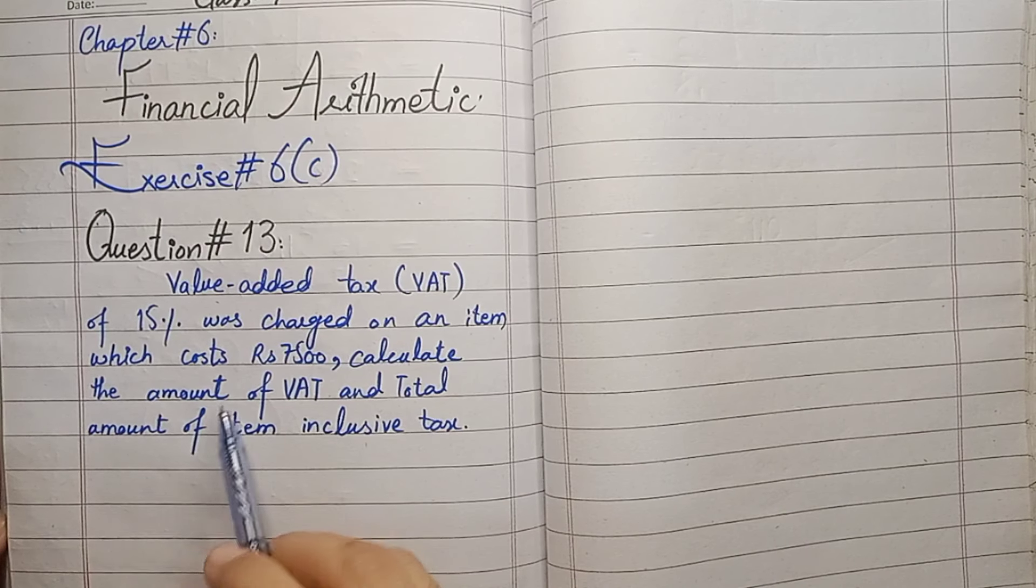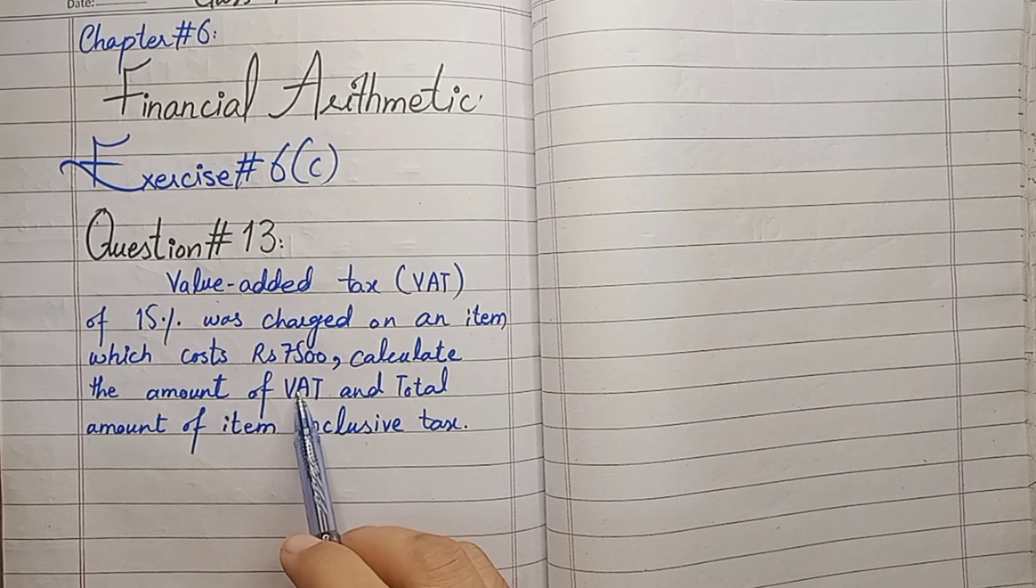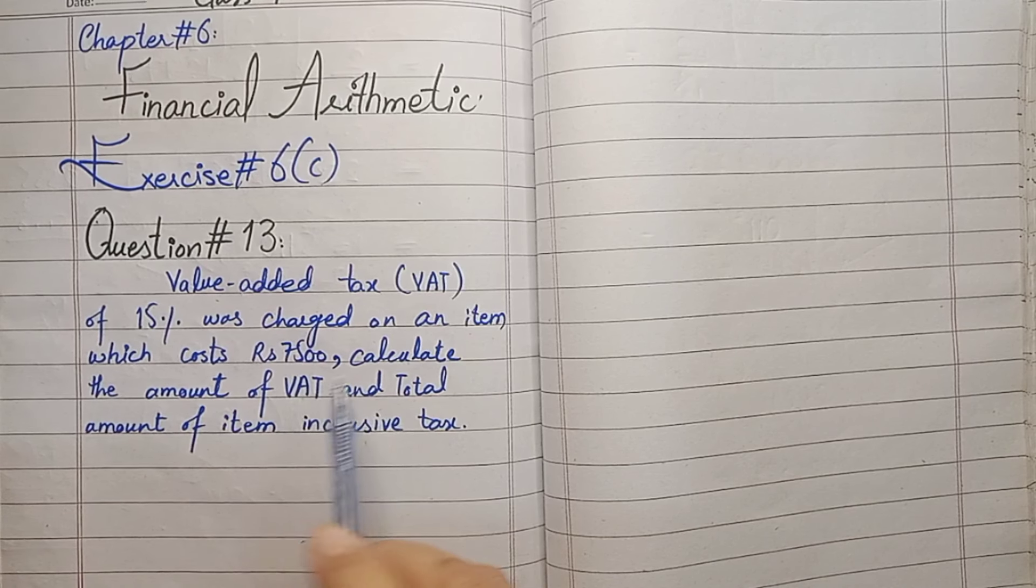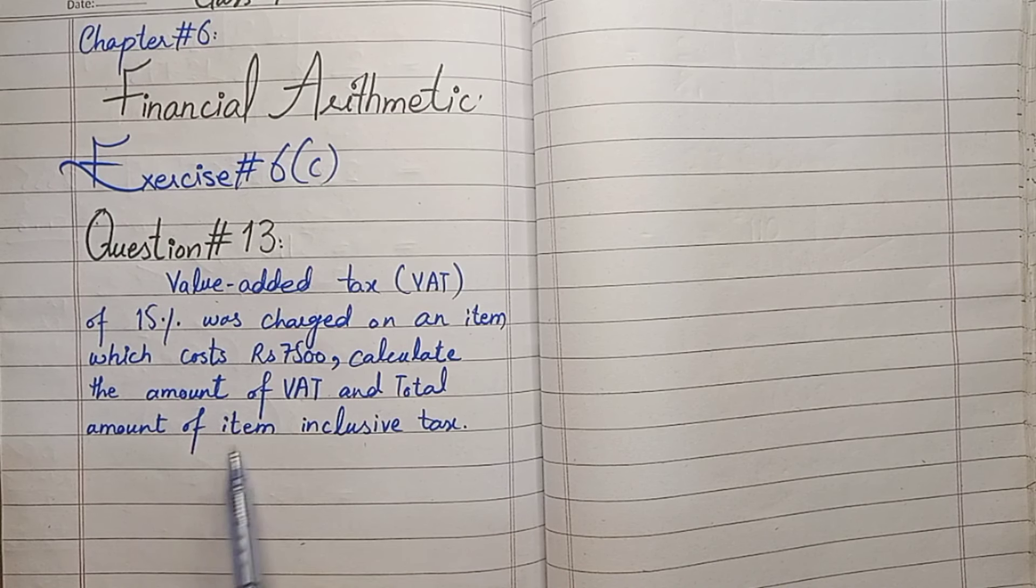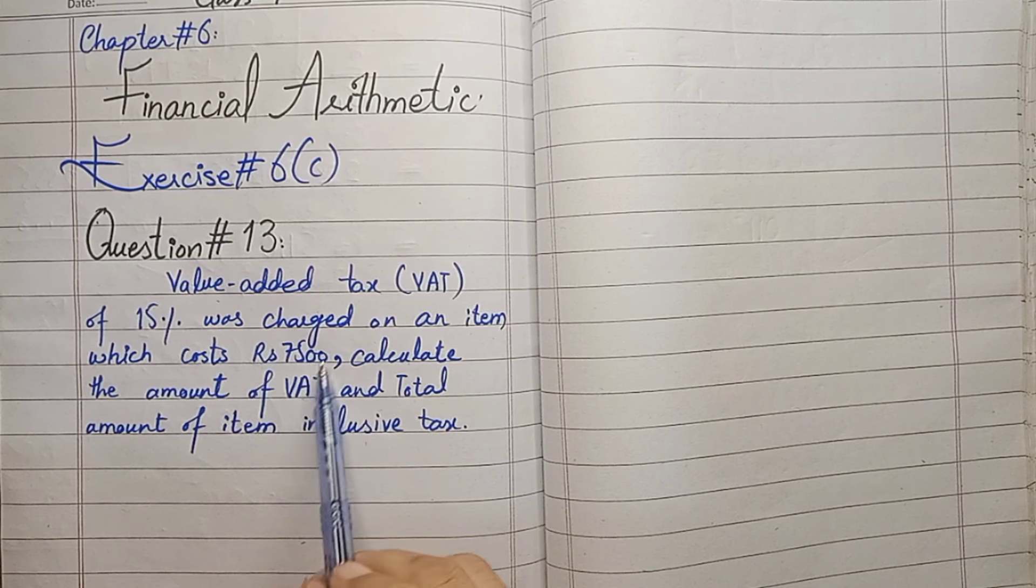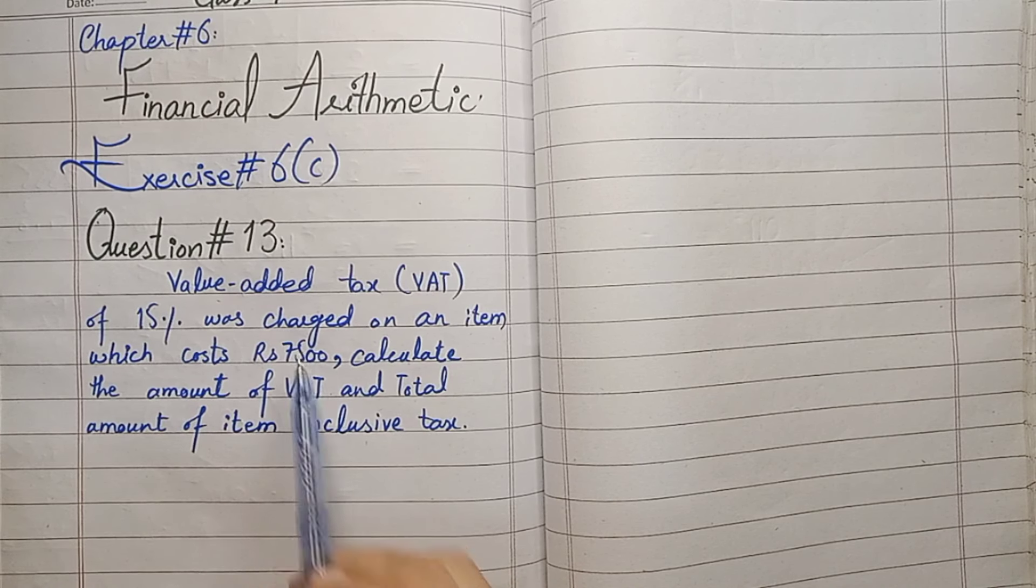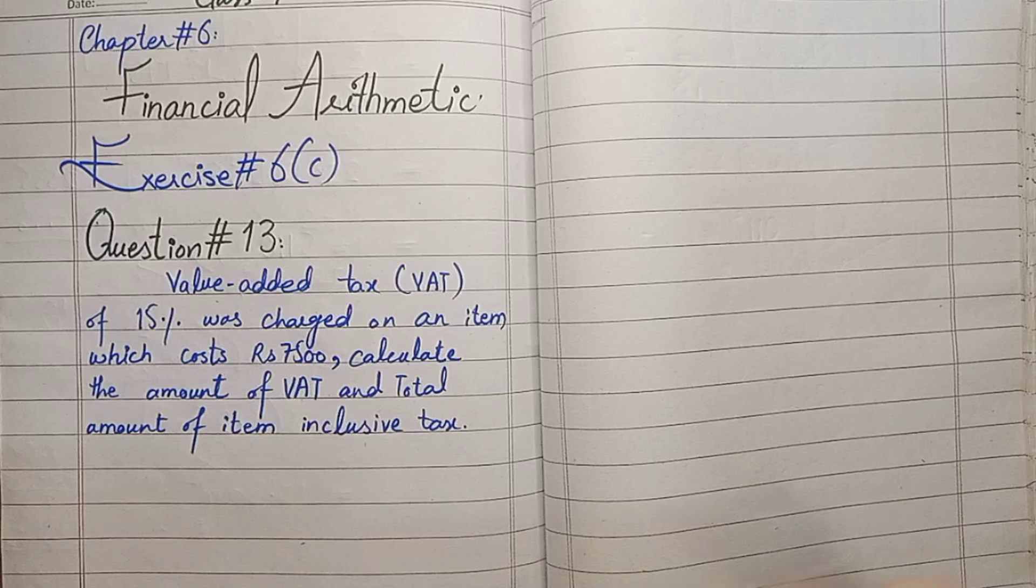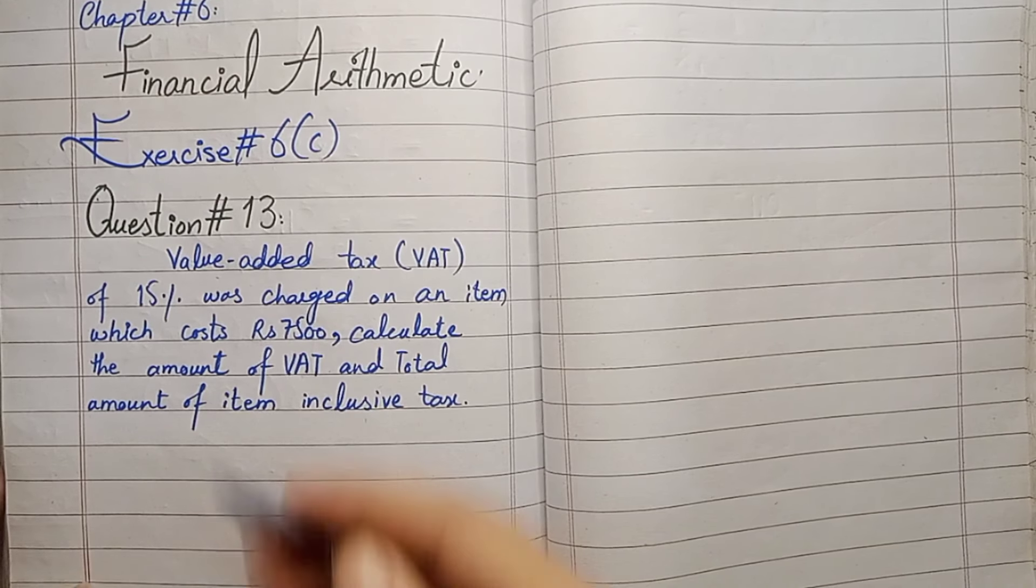Now we have to calculate the amount of VAT, Value Added Tax, and the total amount of the item inclusive of tax. After adding the amount of VAT, we need to know how much the product charges are going to be.